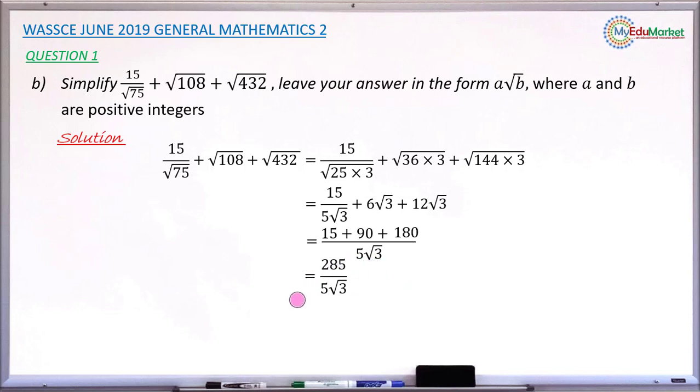Next is to rationalize this because we don't want the surd to appear as a denominator of our fraction. So rationalizing is what you do next. So you're going to have 285 over 5 root 3 multiplied by root 3 over root 3. So 285 times root 3 gives 285 root 3, and 5 root 3 times root 3, you now have root 3 times root 3 that will give answer 3 outside then times this 5 you have 15. So you have 285 root 3 all over 15. 15 can go into 285 to get answer 19. So in the end you have 19 root 3. This is the simplified form of this very problem.